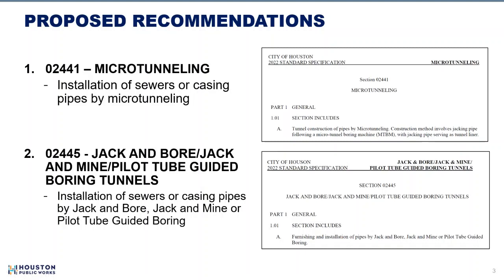The proposed recommendation is to have two standalone specifications. First, keep 2441 for micro-tunneling only — for installation of sewers and casing pipe by micro-tunneling. Second, introduce new specification 2445 for jack-and-bore, jack-and-mine, and pilot tube boring tunnels, intended for installation of sewers and casing pipe by those methods. The intent is to provide clear guidance to engineers, contractors, and project managers to select the appropriate method, minimize unintended changes during construction, and set clear expectations prior to bidding.